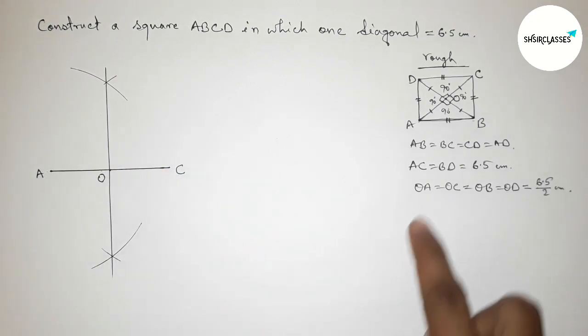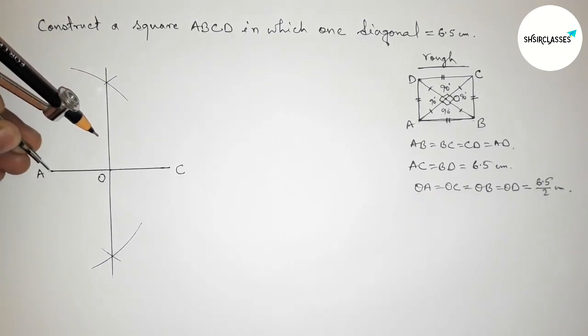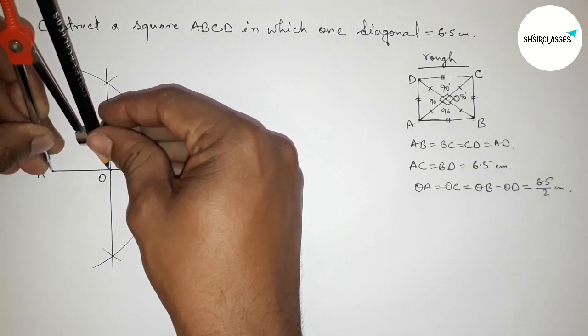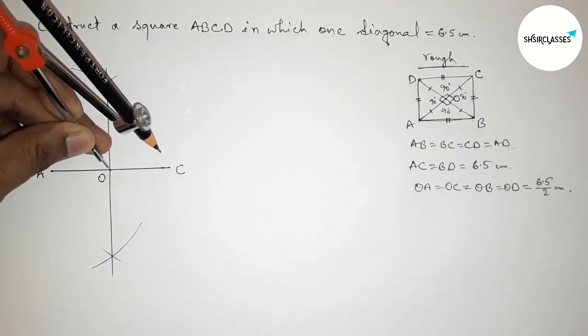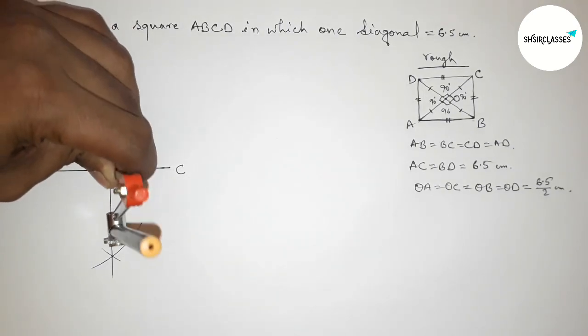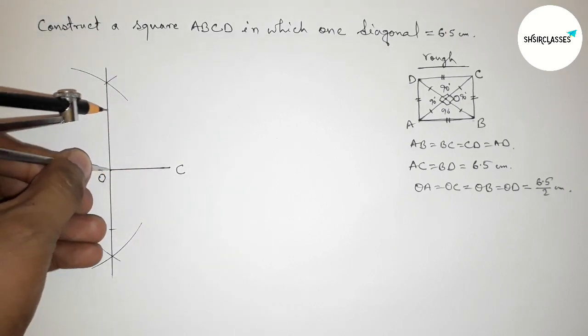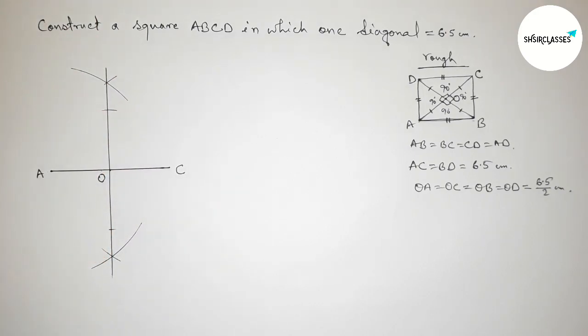Now checking this: OA equals to OC. So first taking the length, taking the length OA and which is equal with OC, so this is perfectly. Now cut here and cut here.